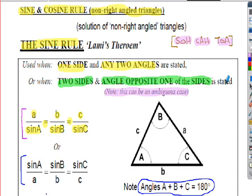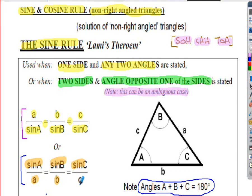Last week I introduced the sine rule: a/sin(A) = b/sin(B) = c/sin(C). We solved lots of problems using that equation, using any two parts at a time. You can also turn it upside down — sin(A)/a = sin(B)/b = sin(C)/c — which makes transposition easier. Remember also that the three internal angles of a triangle always add up to 180 degrees.